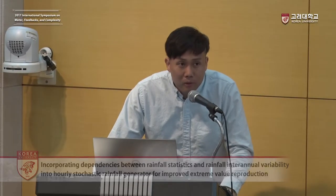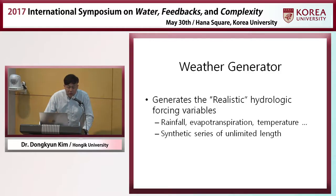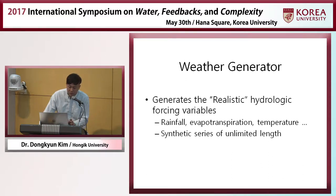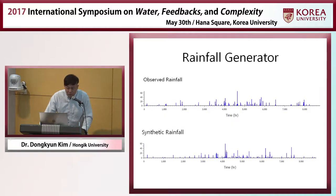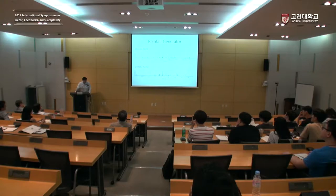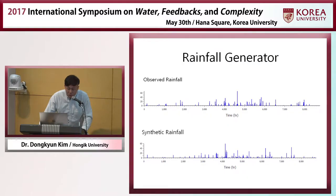What is a weather generator? A weather generator generates realistic hydrologic forcing variables for modeling studies. For example, it can generate rainfall, evapotranspiration, and temperature. It is basically a computer algorithm or program that can synthetically generate time series or space-time fields of these hydrologic forcing variables. A rainfall generator generates a rainfall time series — this is observed rainfall, and this is synthetically generated rainfall. Even though they look really different, their statistical characteristics are very similar.